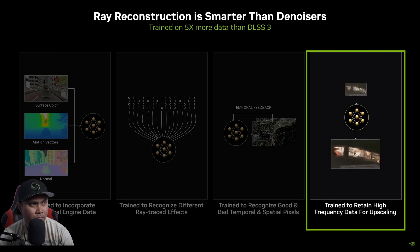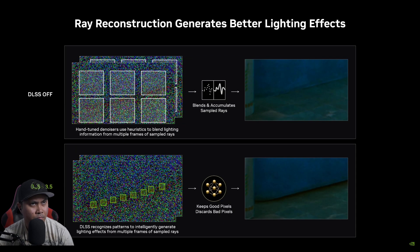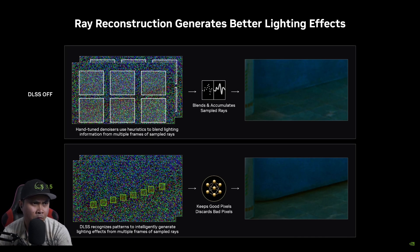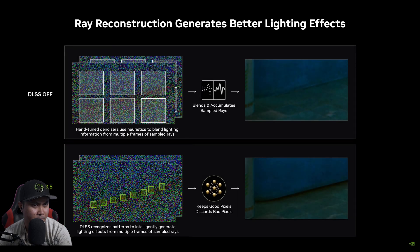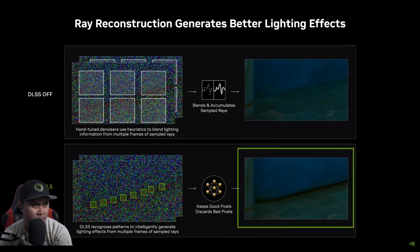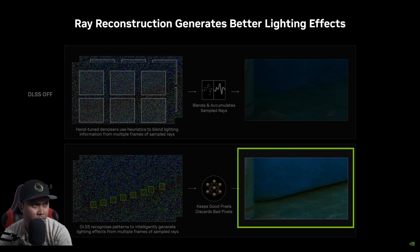Ray Reconstruction is smarter than denoisers. The DLSS AI is trained on a huge dataset of images created using an offline rendering process with far more computation than could be available in real time. The AI then recognizes certain patterns that correspond to effects such as global illumination, and uses information from its training process to reconstruct a more realistic and dynamic image.